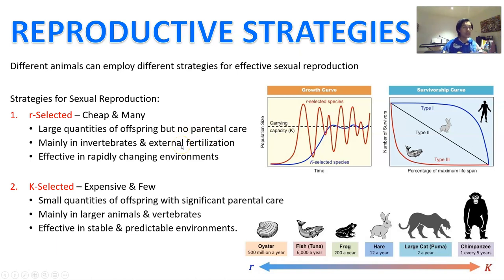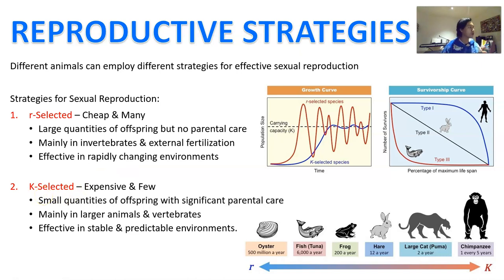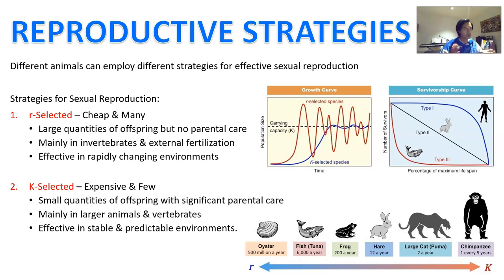In an R-selected strategy, you produce heaps and heaps of babies and then just leave them to their own demise — they have to fend for themselves. You expect maybe only a few survive, but that's okay because each of those few will then produce heaps more babies as well. On the other hand, the K-selected strategy involves producing one or only a few offspring, which is really expensive, but you spend a lot of time and effort caring for that offspring to ensure its survival. This occurs mainly in larger animals and vertebrates, and it is effective in a stable environment.